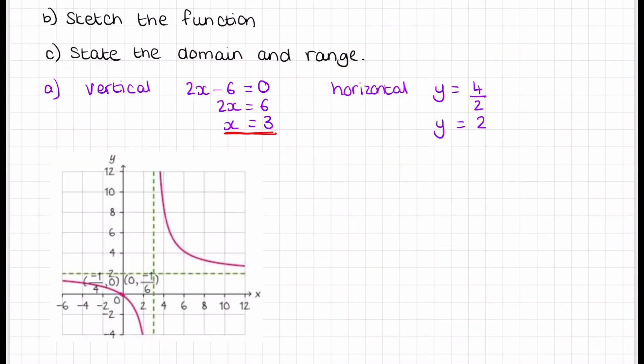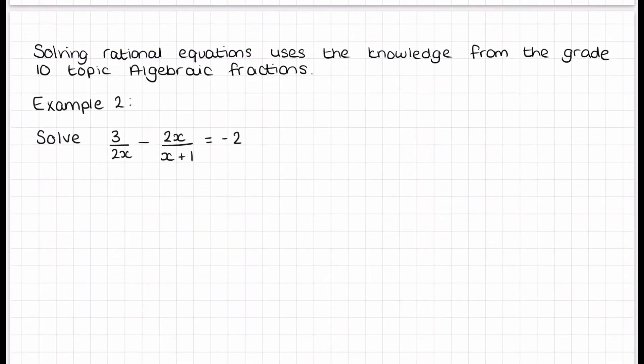You can sketch the function which I've already done here. You see there I've got the two lots of dotted lines horizontal and vertically at 3 when x equals 3 and y equals 2 for the asymptotes. The domain and range, nice and easy. The domain can once again be any x value except 3, and the range can be any y value except 2 because that's where our asymptotes are.